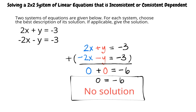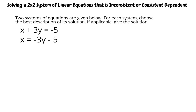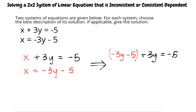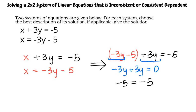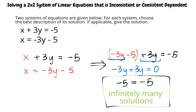Let's practice another example. Two systems of equations are given below. For each system, choose the best description of its solution. If applicable, give the solution. The system is: x plus 3y equals negative 5, and x equals negative 3y minus 5. I will use the substitution method. Since the second equation is already solved for x, I will substitute negative 3y minus 5 in for x in the first equation. Combining terms, negative 3y plus 3y equals 0, so the equation simplifies to negative 5 equals negative 5. Since negative 5 equals negative 5, this system has infinitely many solutions.